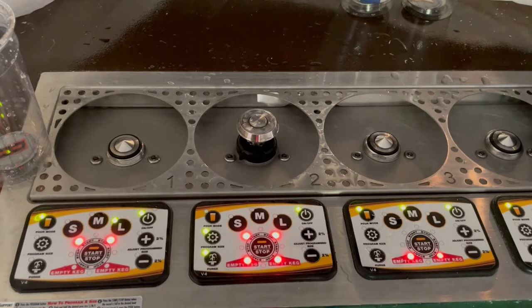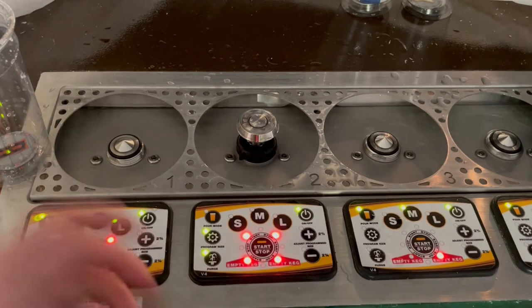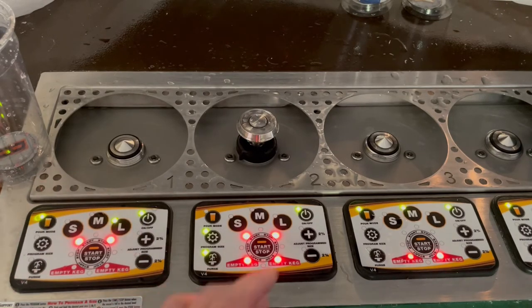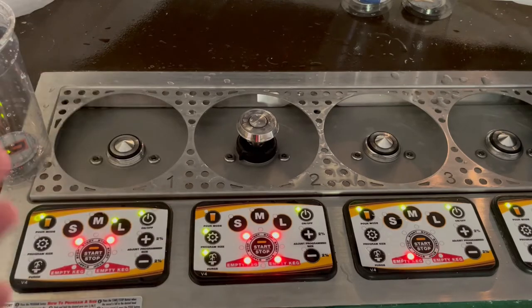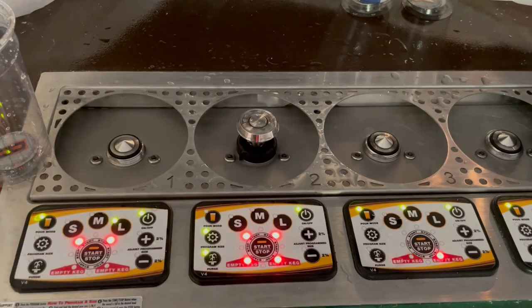We can also clean this way by taking a bucket with warm water and some cleaner solution. Just like if we were starting up with a keg, you fill the keg detector and then purge the line through to clean it.